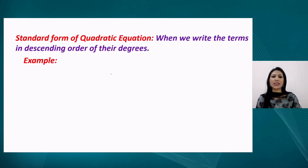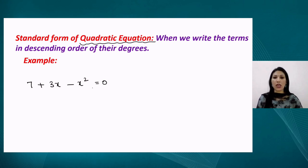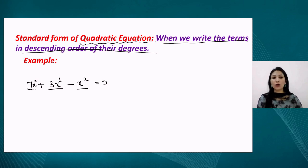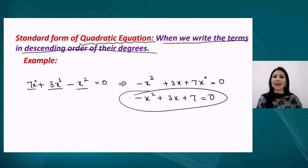After studying the definition of a quadratic equation, let us see how to write one in its standard form. For example, if we are given 7 + 3x − x² = 0, this is a quadratic equation but not in standard form. To write it in standard form, we arrange the terms in descending order of their degrees — degree 2 first, then degree 1, then degree 0 — giving us −x² + 3x + 7 = 0 rearranged accordingly. This rearranged form is called the standard form.